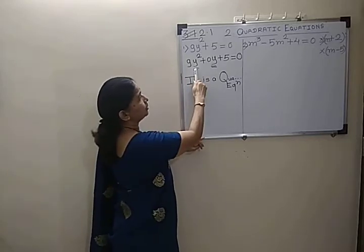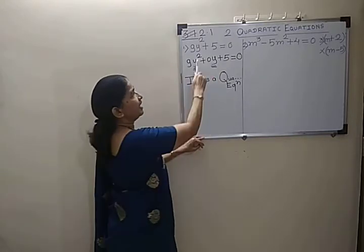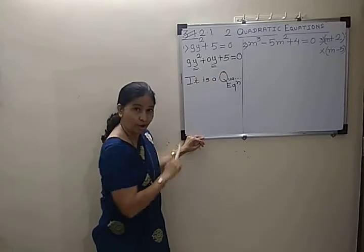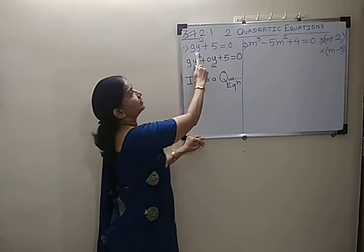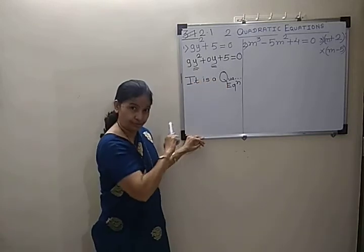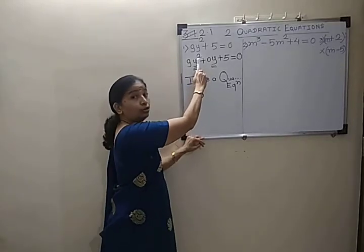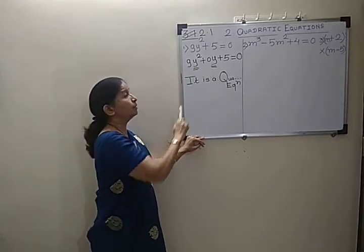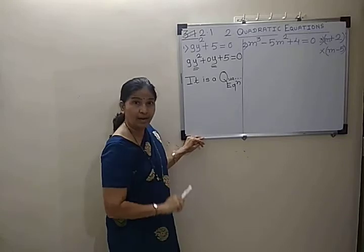It is a quadratic equation because it satisfies both conditions: the first condition is that there is only one variable, y, and the highest index (degree) is 2. We will only call a given equation a quadratic equation if there is a single variable and the degree — the highest index — is exactly 2.